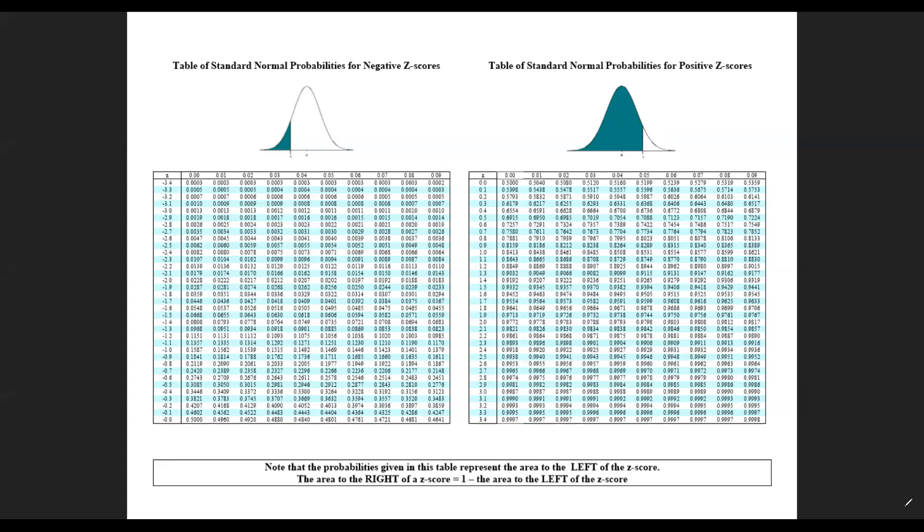In this example we're going to go through probabilities of normal distributions, and in order to do that we need to be familiar with the table you see in front of you called the standard normal table, sometimes referred to as the Z table.